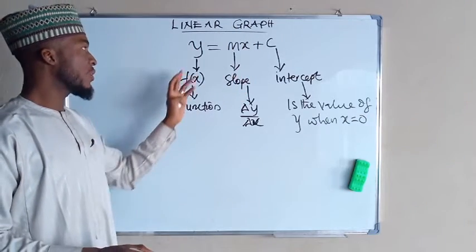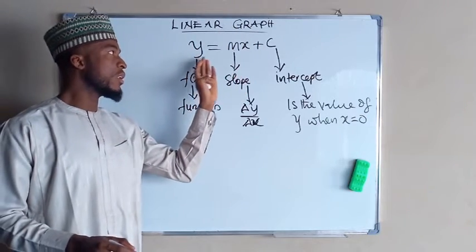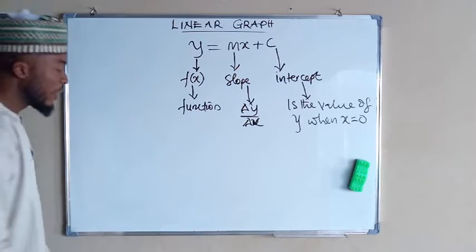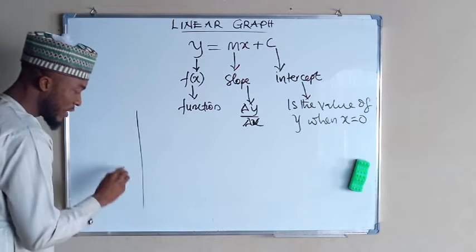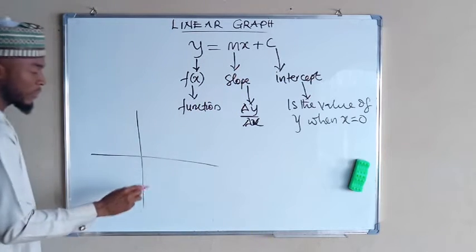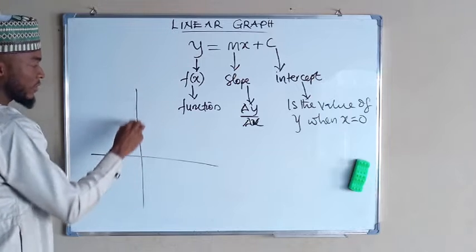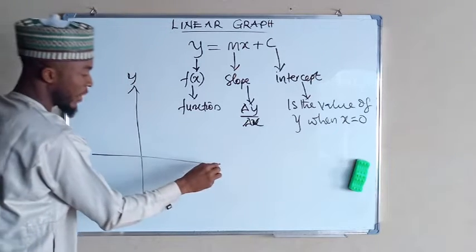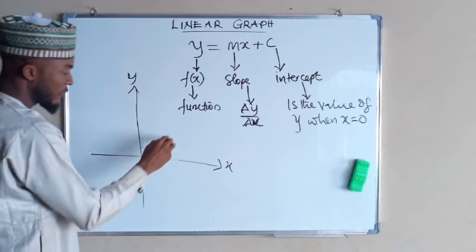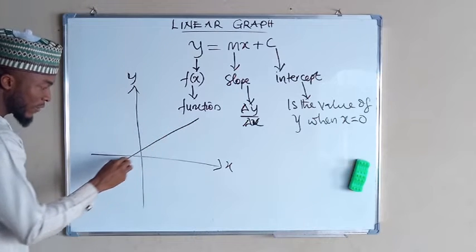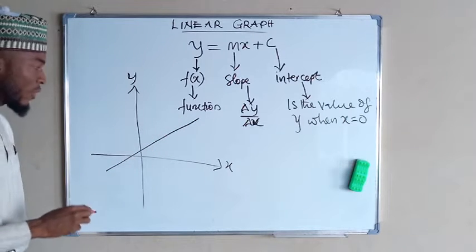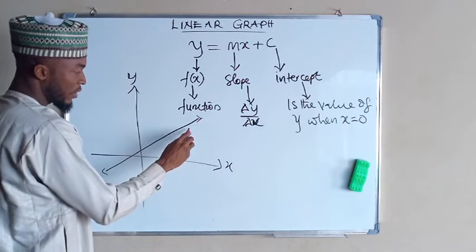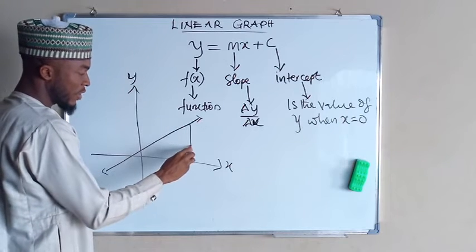So these are the interpretations of the linear equation — the general form of a linear equation. First we have a graph of a linear equation: this is the y-axis while this is the x-axis. A linear graph means a straight line graph coming from these two points.